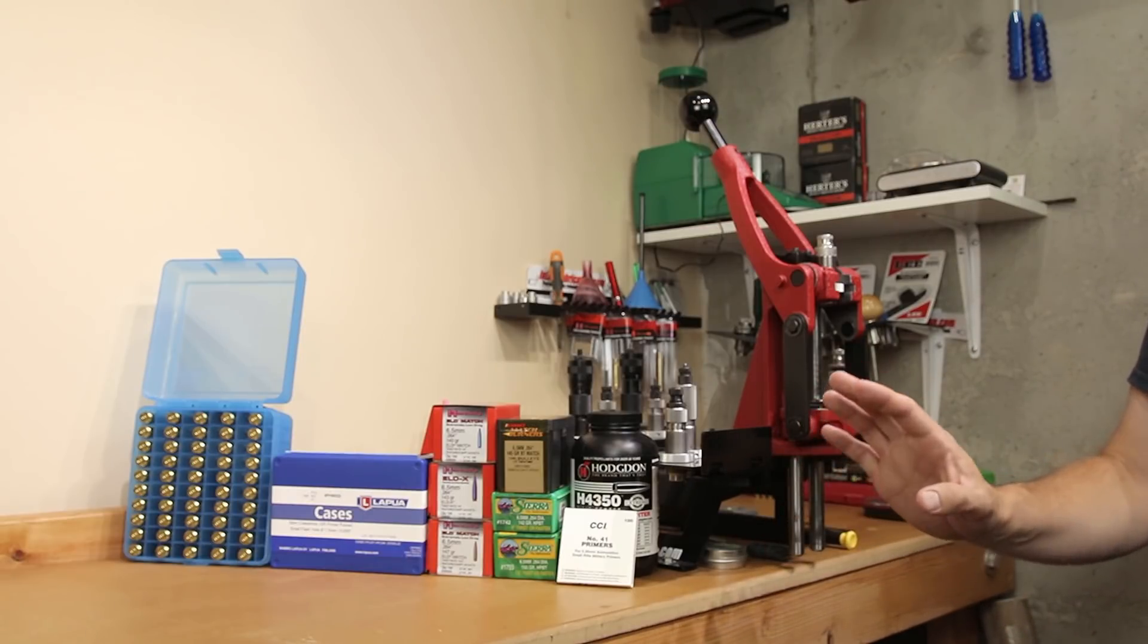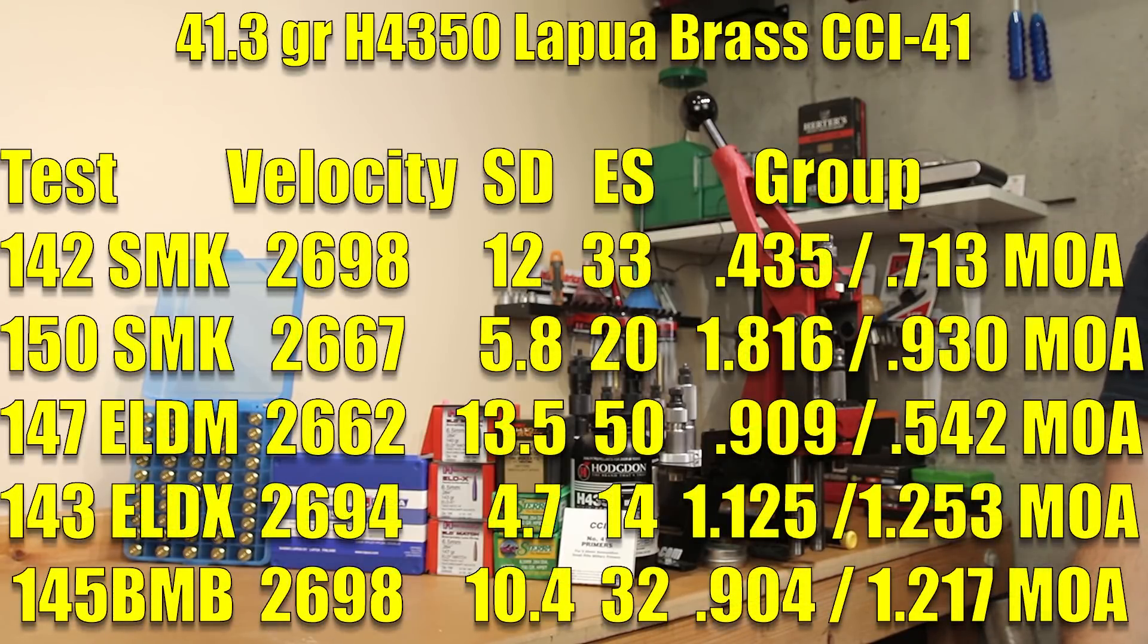Brand new barrel. We really are trying to get an idea right out of the gate to find out which projectiles that this particular barrel might like. Averaging all 10 of those shots, our average velocity was 2667 feet per second, standard deviation of only 5.8 with an extreme spread of 20.